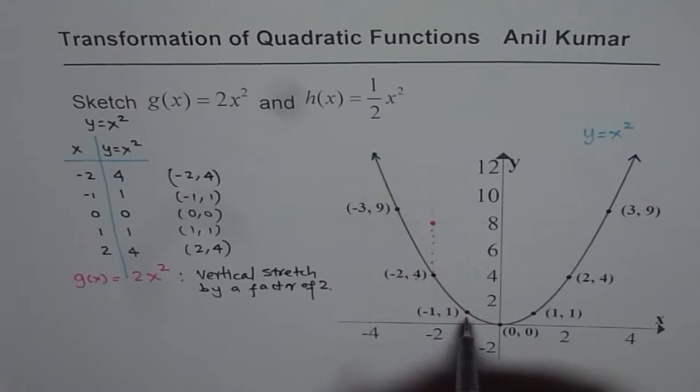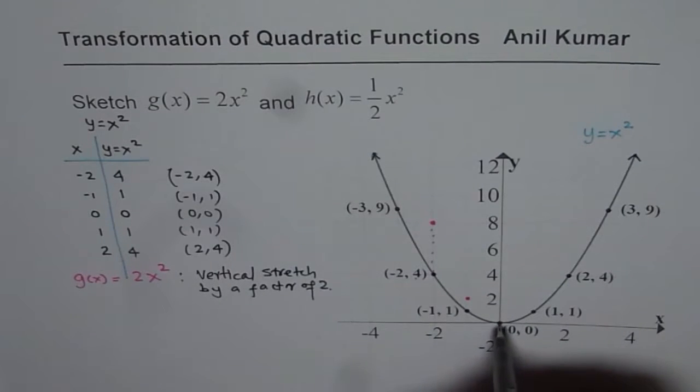Similarly, let us take the next point. Y value is 1. 1 times 2 is 2. So it moves right there. 0 times 2 is 0. So it remains. So the vertex for this graph remains at the same point.